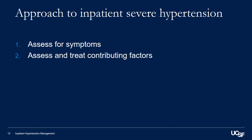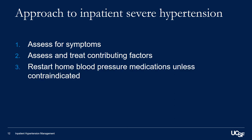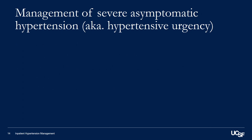Once you've assessed for and treated some of these factors and blood pressure still remains high, the next step is to review and restart any home blood pressure medications that may not have been continued in the inpatient setting, unless they're contraindicated. After doing these things, if the patient's blood pressure still remains severely elevated, you should consider initiating an oral antihypertensive agent.